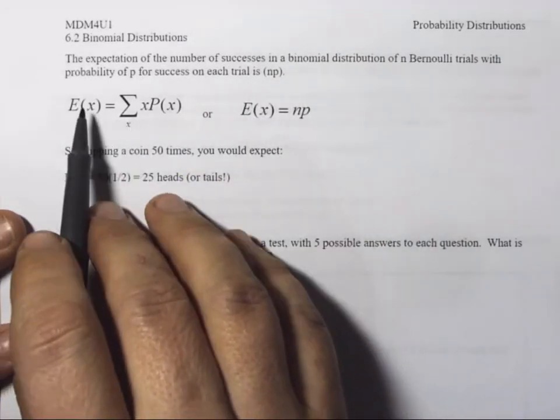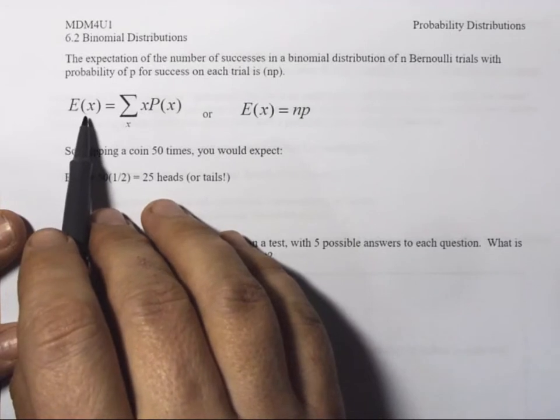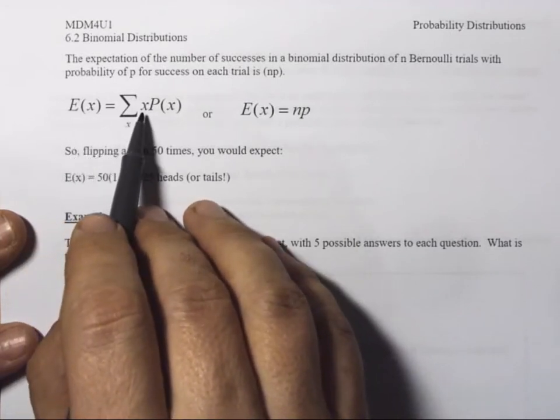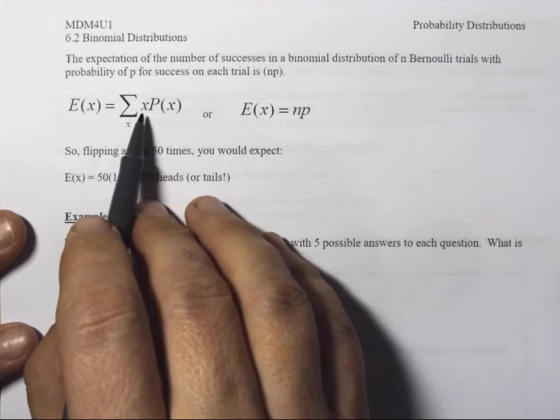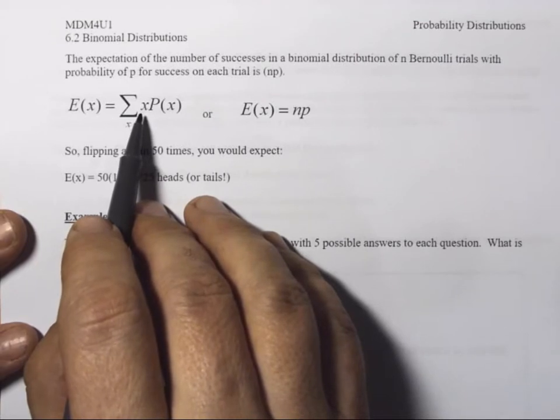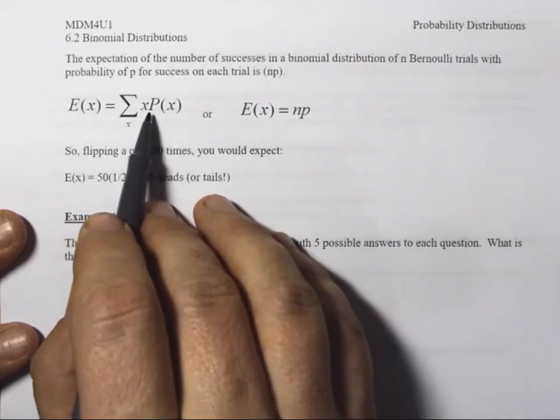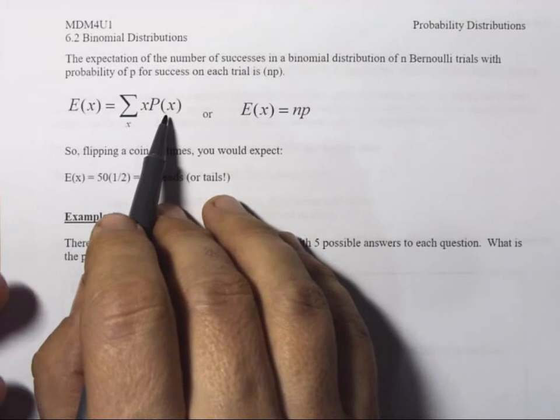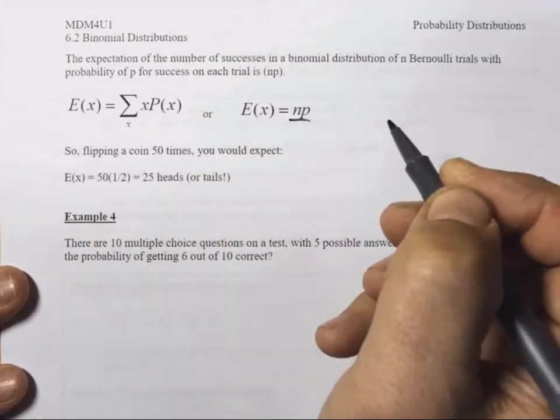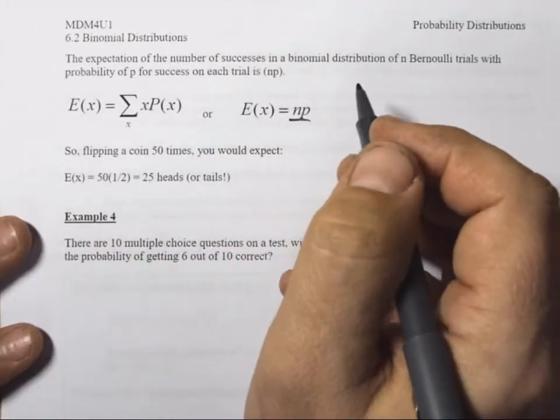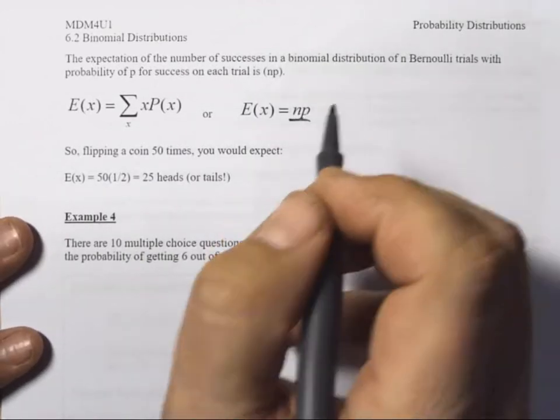Now, one way to calculate the expected value, just so you remember, is to add up the average or the weighted average of each x times px. You add those up, you get an answer. But there's a shortcut. For a binomial distribution, the shortcut is just to multiply n times p.